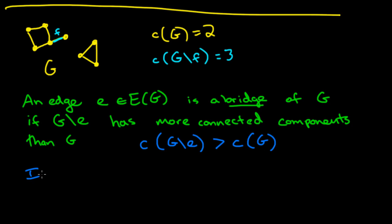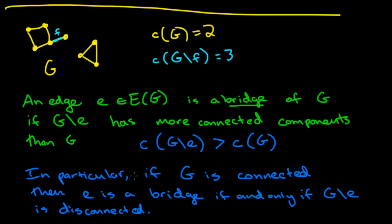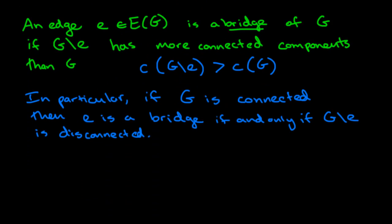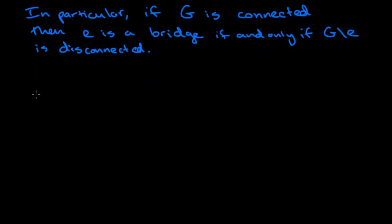In particular, if G is already originally connected, then an edge is a bridge if and only if removing that edge creates a disconnected graph. Let's look at one more example: suppose our graph is some kind of cycle with an additional vertex and maybe another vertex attached. If we remove any one of the three edges on the cycle, it will not disconnect the graph. However, removing either one of the pendant edges would disconnect the graph, so those two edges are bridge edges.